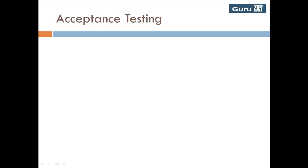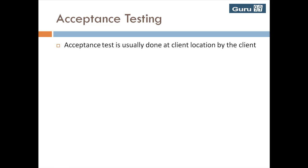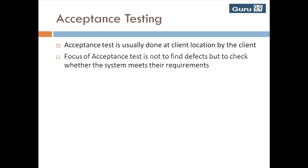Acceptance testing is usually done at the client location, by the client, once all the defects found in the system testing phase are fixed. The focus of acceptance testing is not to find defects, but to check whether the software system meets their requirements.